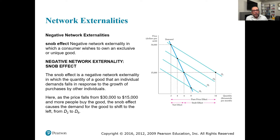Negative network externality is also possible, and we observe it especially in products with a snob effect. The snob effect means some firms develop products in such a way that they convince buyers the product is specially designed for very few people, and you are one of those few. That's what we call the snob effect. It is a negative network externality because if they produce in bulk, those special customers lose interest.